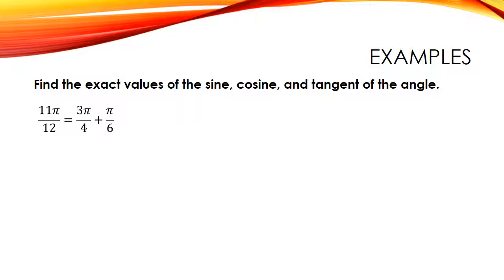Now we're going to find the exact value of the sine, cosine, and tangent of an angle. We've shown you how to break 11π/12 down into 3π/4 plus π/6. A really easy approach is to write down your special angles — π/3, π/4, π/6, π, and maybe some multiples — then change them to have the denominator of the angle you're looking for. In this case, change them to have a denominator of 12. 3π/4 is 9π/12, and π/6 is 2π/12; 9 plus 2 is 11. Pause the recording, use the sum and difference formulas for sine, cosine, and tangent, give this a try, then resume to check your answer.